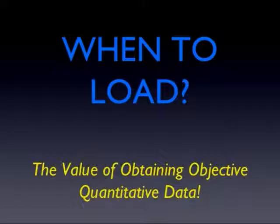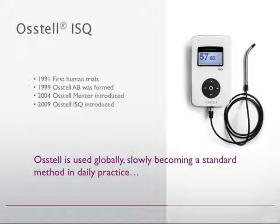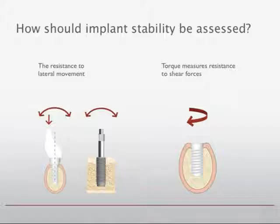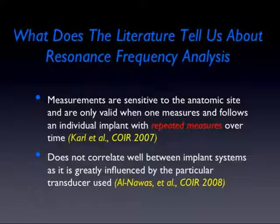So when do you load? Let's get some objective quantitative data to do that. The ISQ values through the OSTEL machine are certainly the best method of doing that today. Reverse torque versus SmartPeg technology — I'd rather see resistance to lateral movements than to screw movements with shear forces, which have very little to do with occlusion. The nice thing about this machine and this data is that it's scientifically proven — there is good literature that supports it.